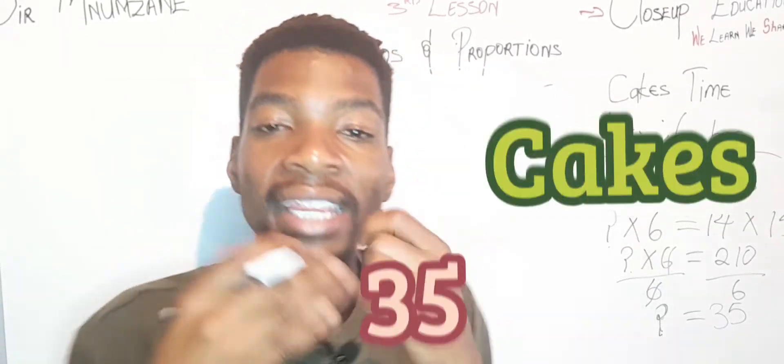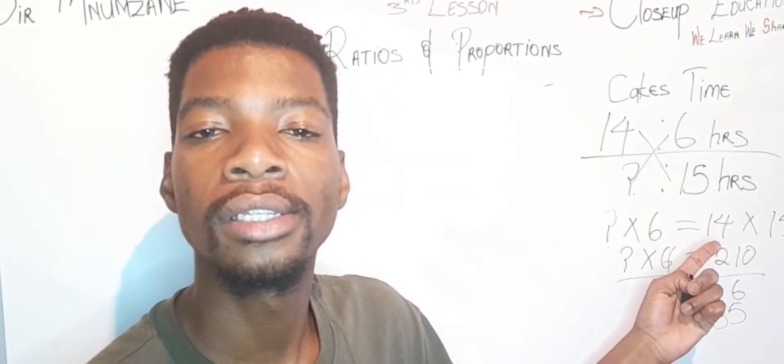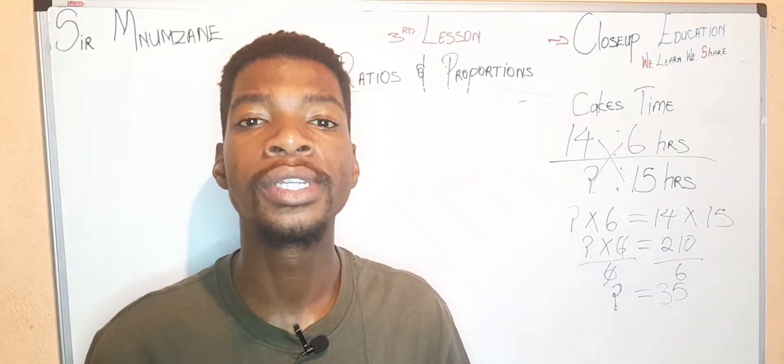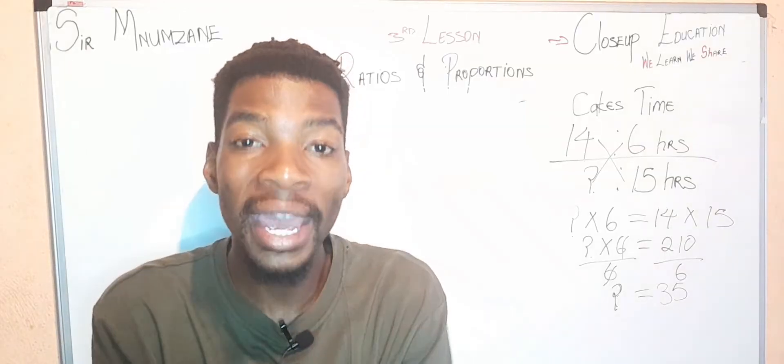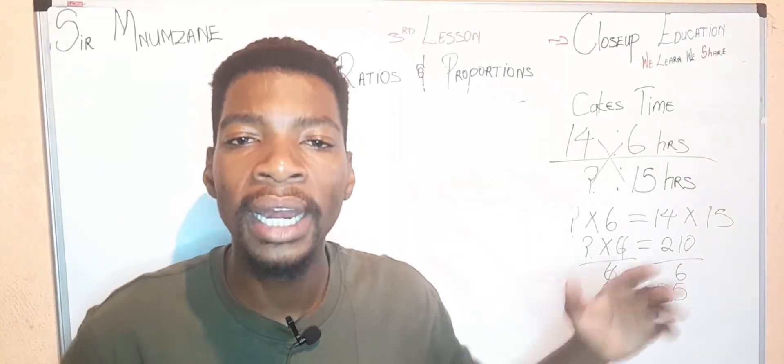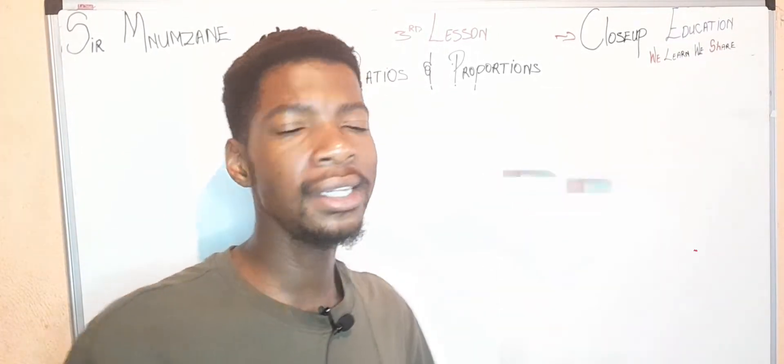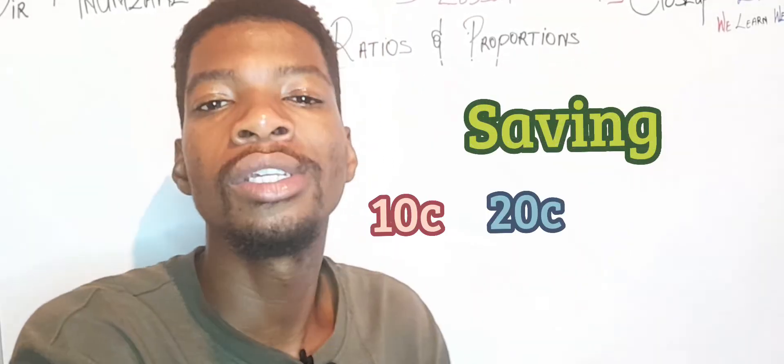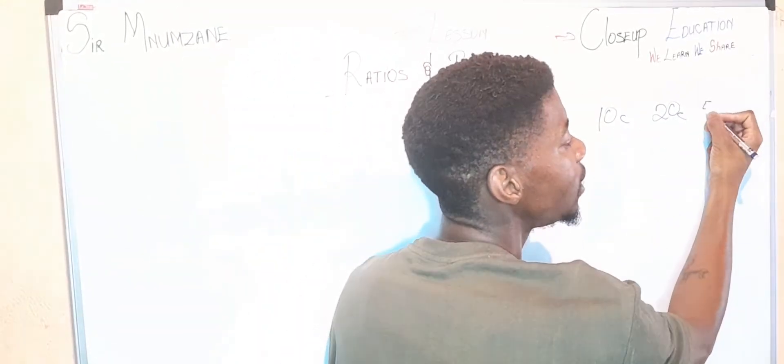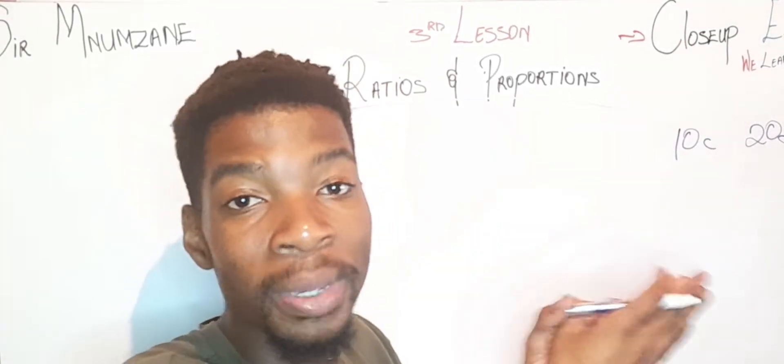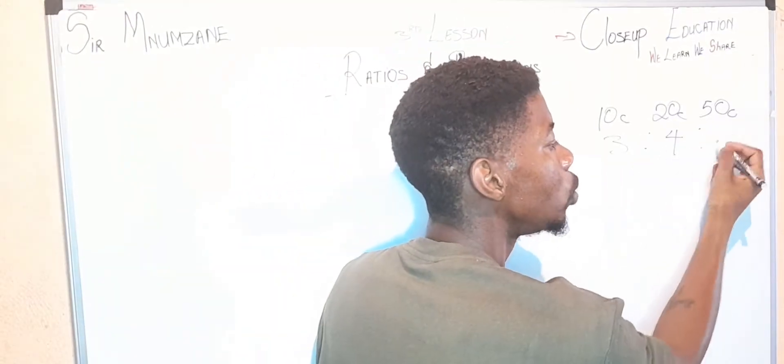Divided by 6, what do we have? We are left with the unknown, and 210 divided by 6 is 35 cakes. Semumzane can bake 35 cakes in 15 hours. This very last question involves a mixed ratio. If you made it this far, congratulations because you are going to finish your paper with full marks.